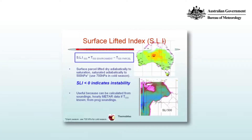The Surface Lifted Index (SLI) is a useful measure of instability used in thunderstorm forecasting. The SLI to 500hPa is the temperature of the environment at that level minus the temperature of the parcel. If a parcel of air lifted to 500hPa is warmer than its environment, then the SLI will be negative, indicating instability. The SLI is calculated by lifting a surface parcel dry adiabatically to saturation and then lifting it along a saturated adiabat to 500hPa.